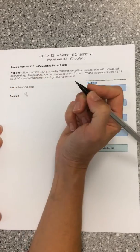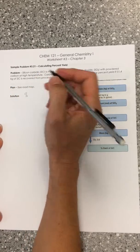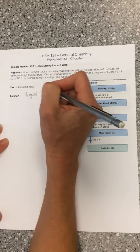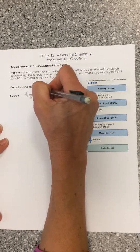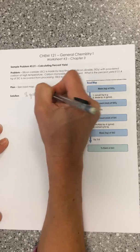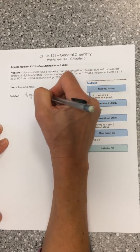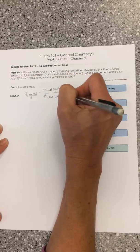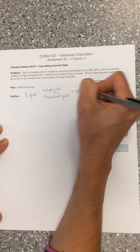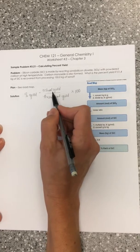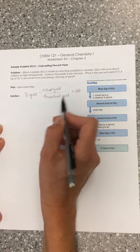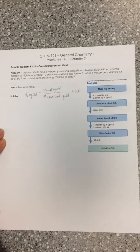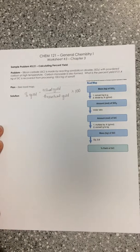Anytime you hear the word percent, you want to think part over whole. So in this case, percent yield is going to be equal to our actual yield divided by our theoretical yield times 100. So the part is how much did you actually make. The whole is how much could you have made, and then multiplying by 100 to get that to a percent.